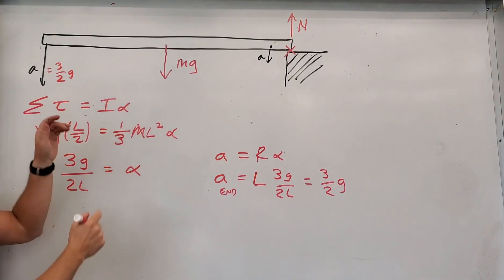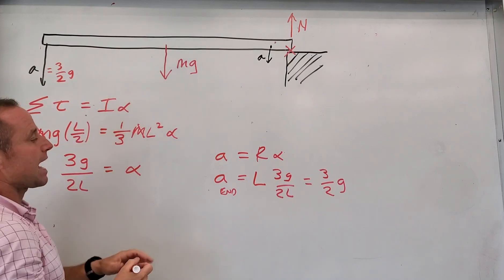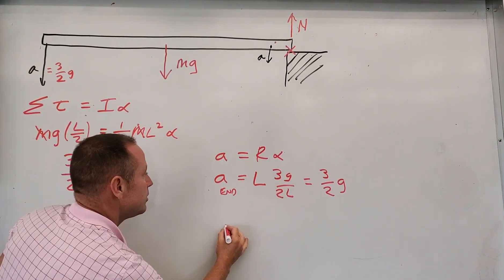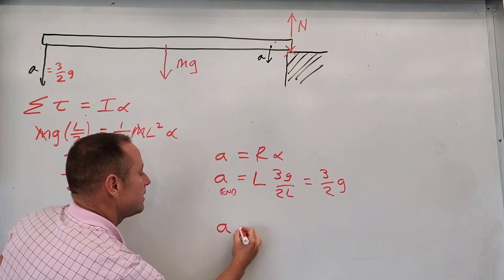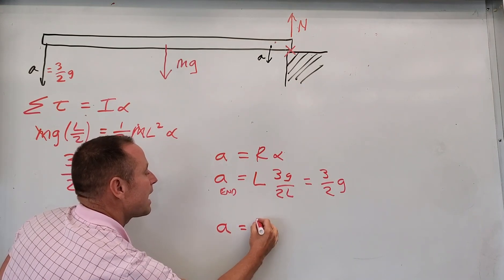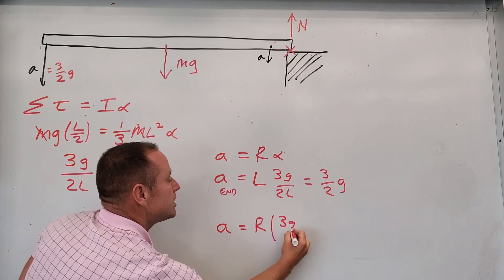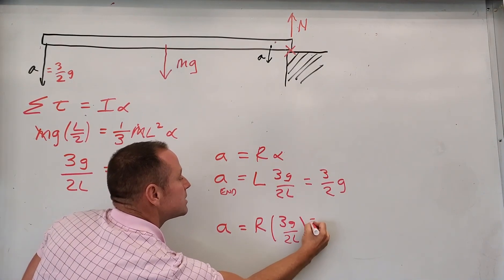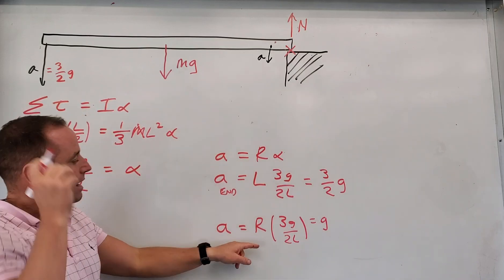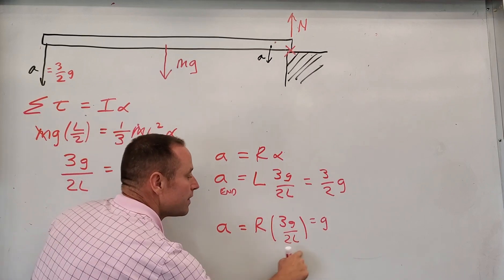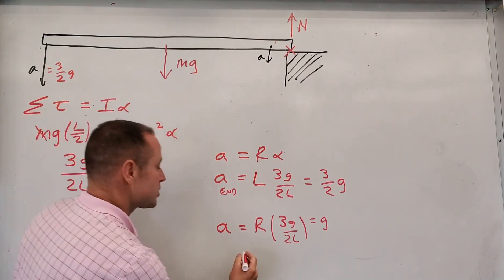So there is a point where the acceleration would be exactly equal to g. To see where that is, you could say a equals, and then we could find the point where r times 3g over 2l is going to be equal to g. What you can see is if you're at two-thirds the length of the stick, then these two expressions would be equal to each other.